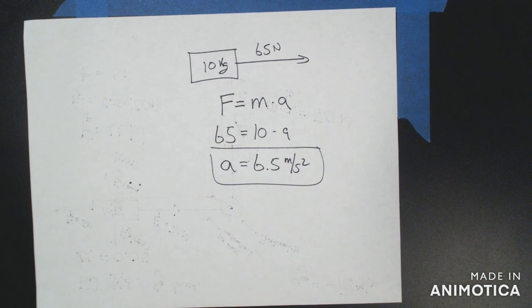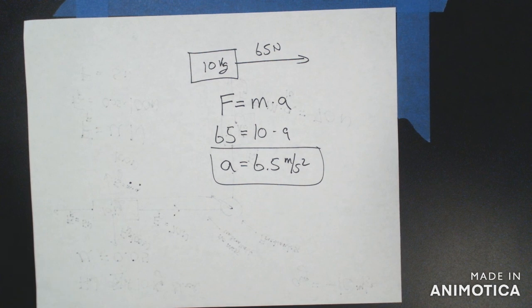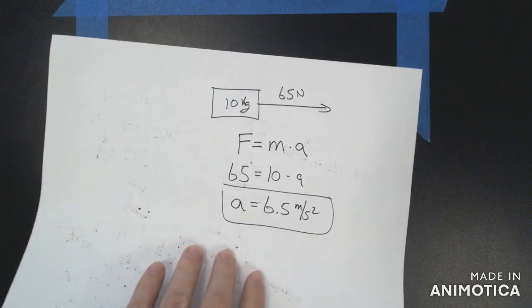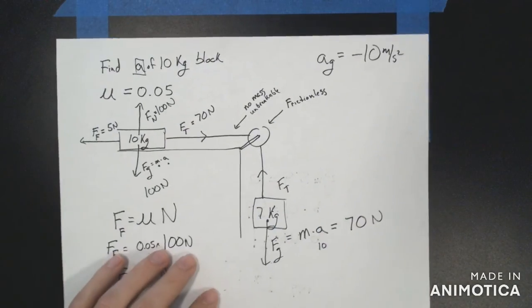That is how you solve an Atwood's machine problem. There are other setups for Atwood's machine problems, but if you solve them the same way — first identifying your forces, identifying their directions, then quantifying, simplifying, and solving — you will get the answer consistently every time. That is how we use forces and Newton's laws to predict how an object is going to move. Hopefully you found these examples useful, and I'll see you in class.